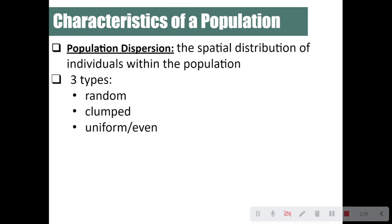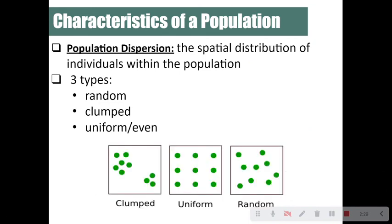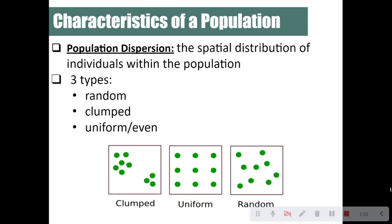Population dispersion is the spatial distribution of individuals within a population, and there are three types: random, clumped, and uniform. In a clumped dispersion, individuals form groups. In a uniform dispersion, all individuals are equally distant from those around them. In a random dispersion, individuals are just scattered all over the place.